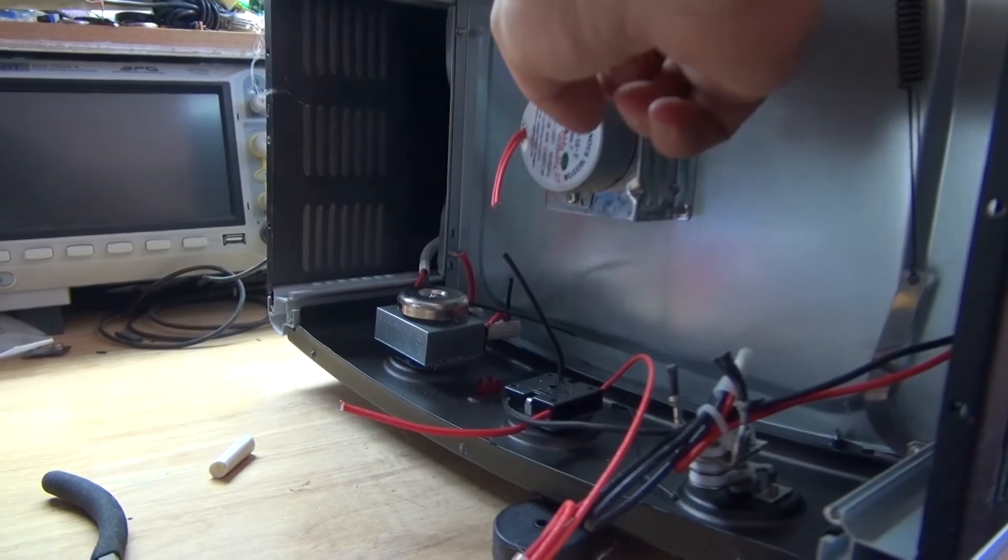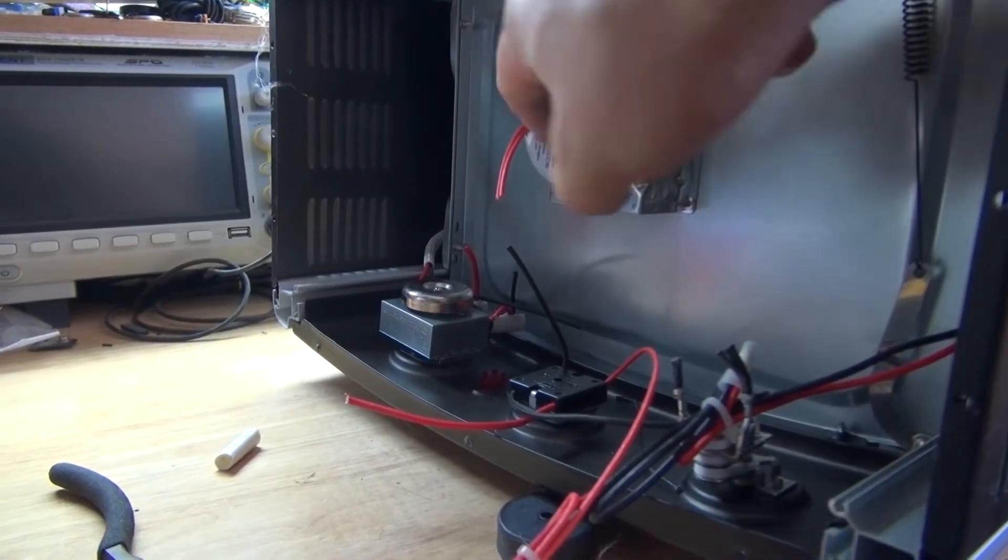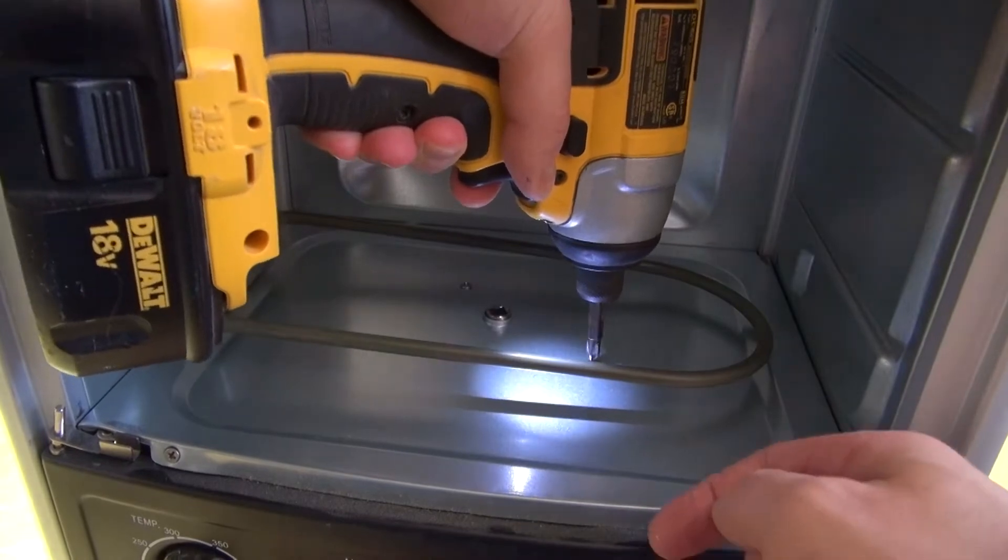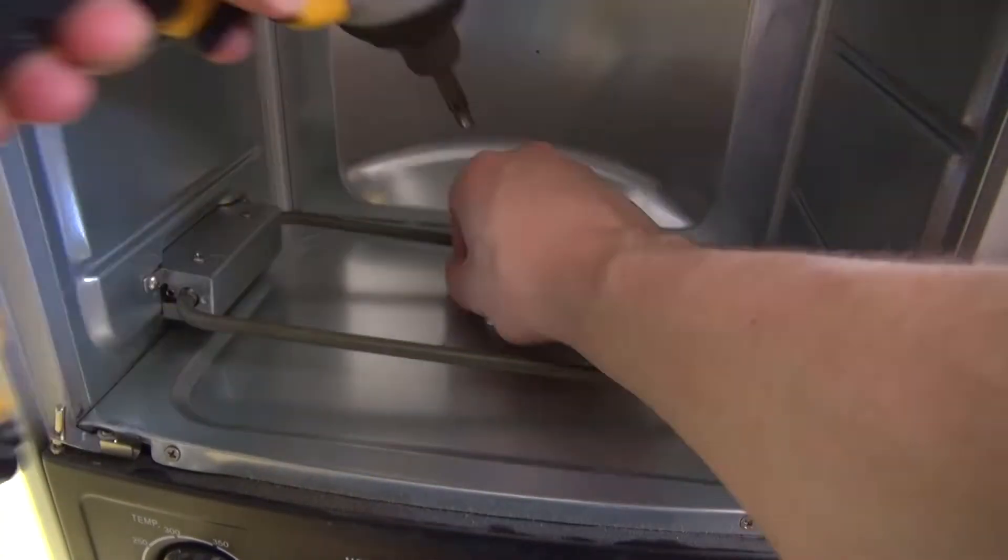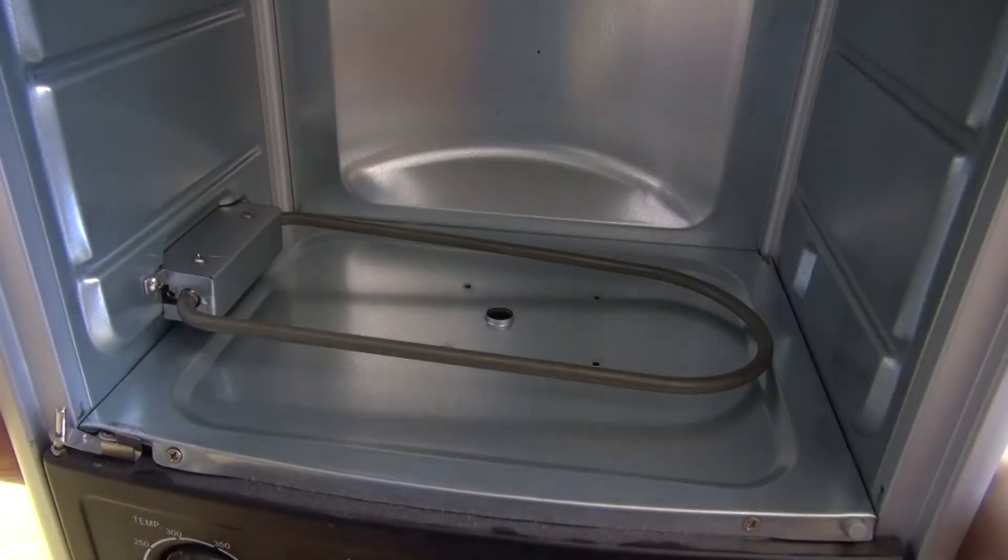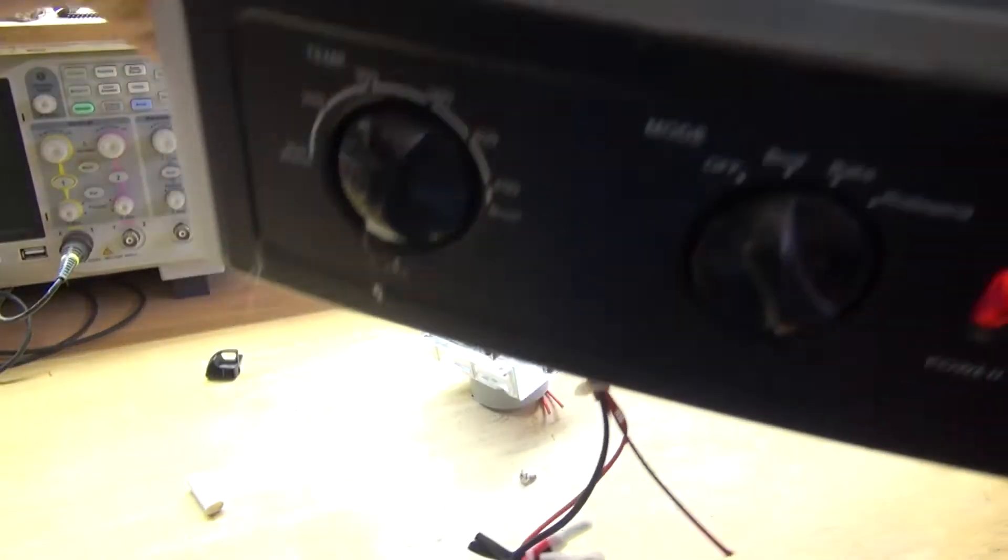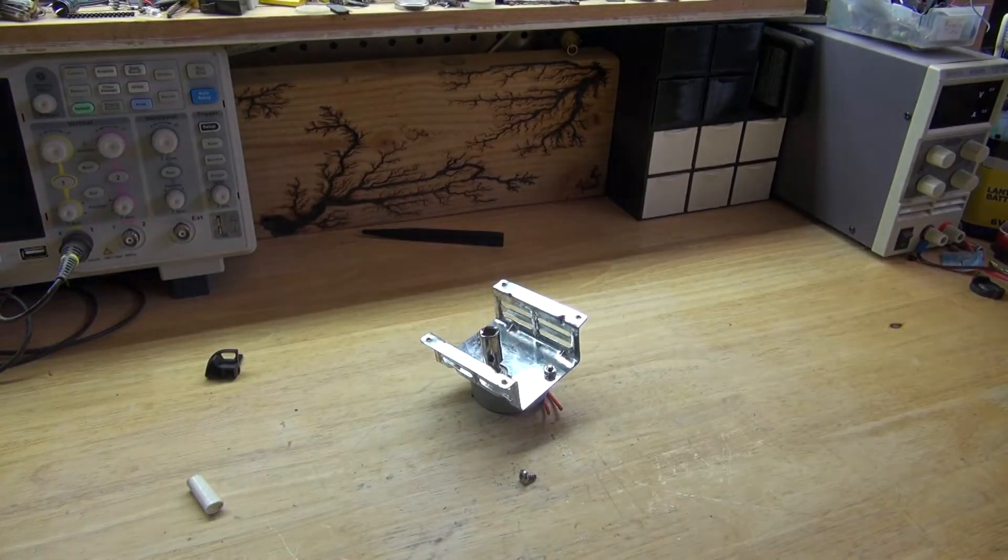Okay, so now I'm going to go and remove the AC gear motor. Removing it from the inside is a lot easier. And there, it comes out just like this.